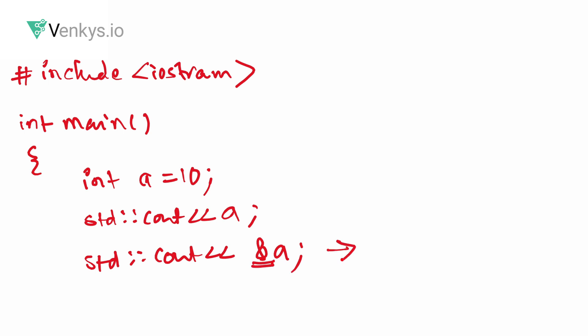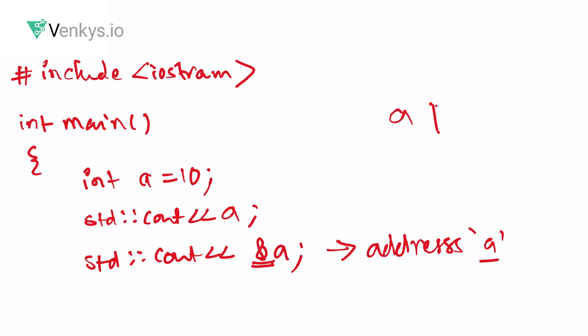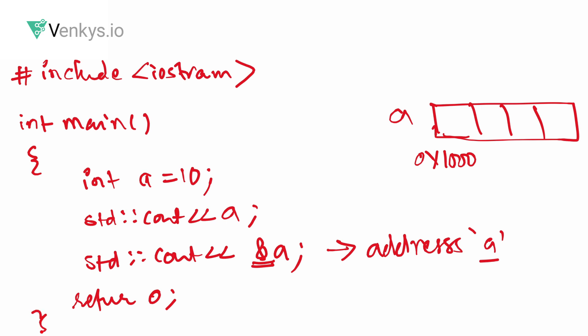The ampersand is used here to print the address of variable a. In a previous example, a has four bytes — one, two, three, four — and every cell has an address for one byte: 1000, 1001, 1002, 1003. When you say a, it prints the starting address of your variable a, so the output would be 0x1000 in this example.